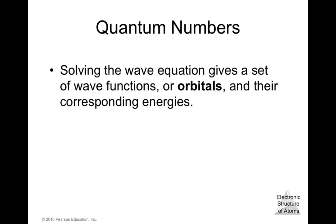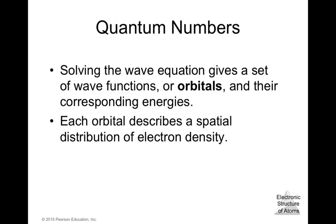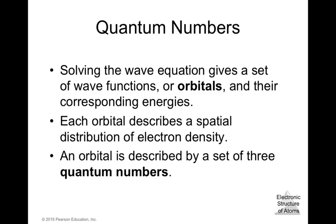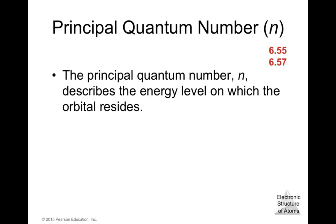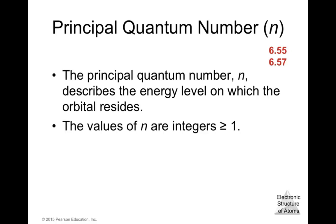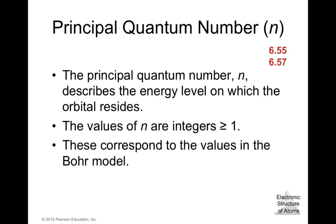Solving the wave equation gives a set of wave functions known as orbitals and their corresponding energies. Each orbital has a specific energy and describes a spatial distribution of electron density. An orbital is described by a set of three quantum numbers. The first is the principal quantum number n, which describes the energy level on which the orbital resides. Values of n are integers — 1 or larger — corresponding to the values in the Bohr model.